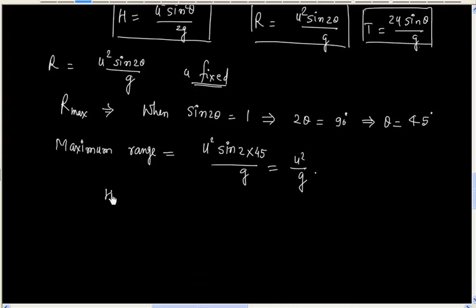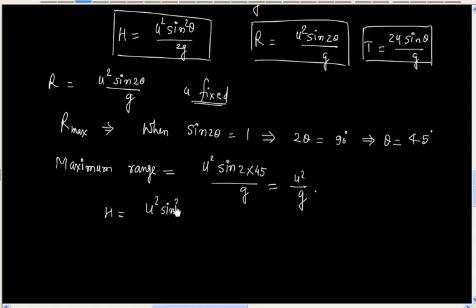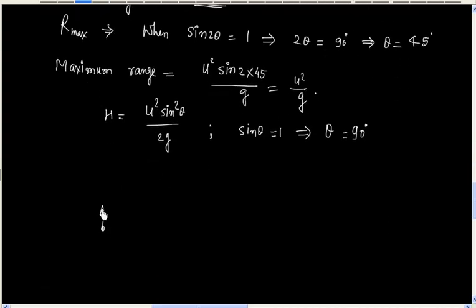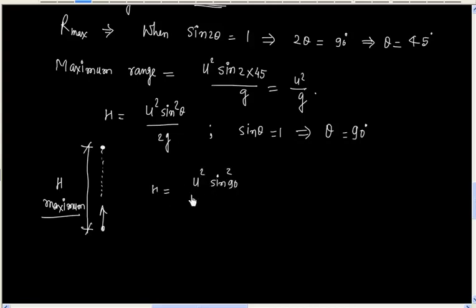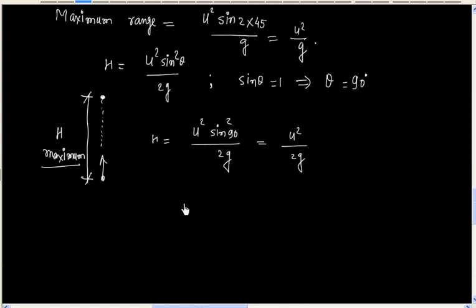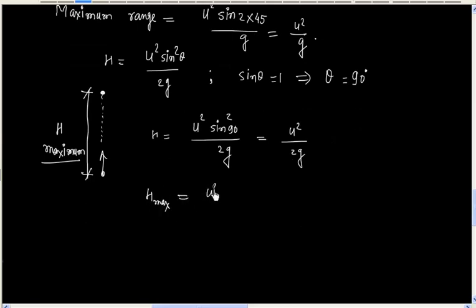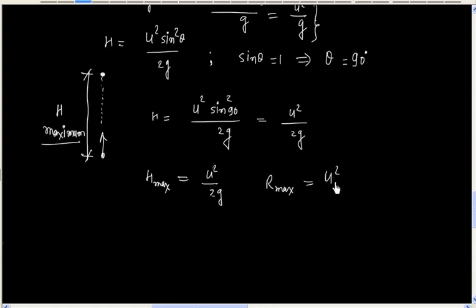Similarly, we can find the condition so that h will be maximum. Height will be maximum when sin theta is equal to 1, that is theta is equal to 90 degrees — meaning the projectile is thrown vertically up. In this case height will be maximum, and the value of maximum height will be u squared by 2g.